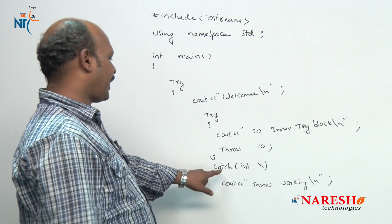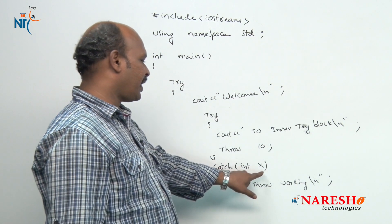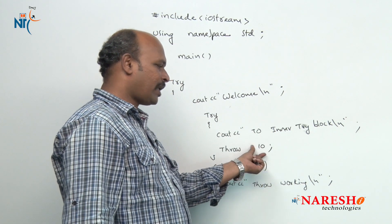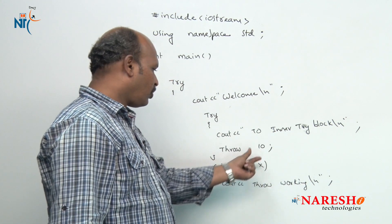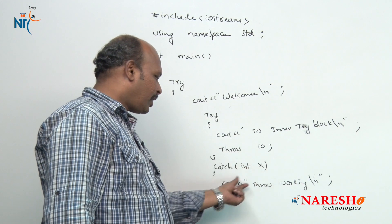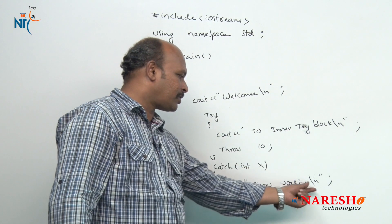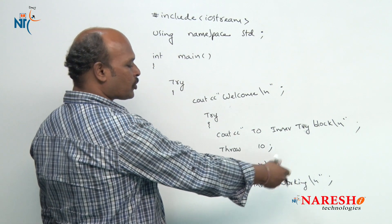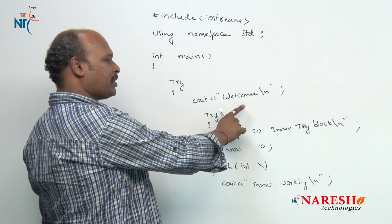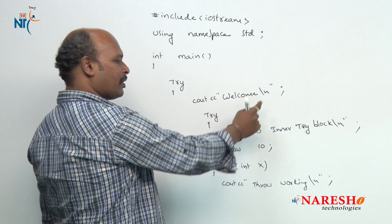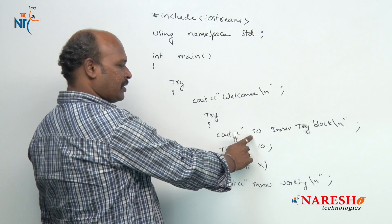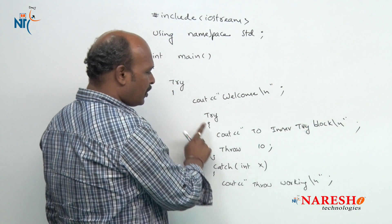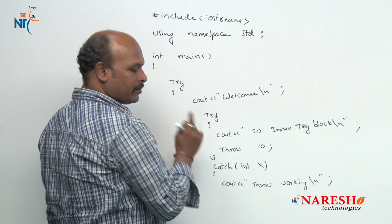Now what happened: catch of int x — this x is going to receive the value 10. It is going to receive 10 and this message is going to be shown on the screen. So first message is 'welcome', next message is 'to inner try block', and then it is going to throw something.